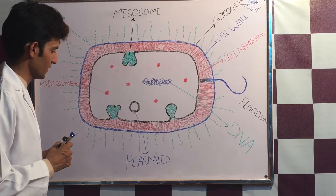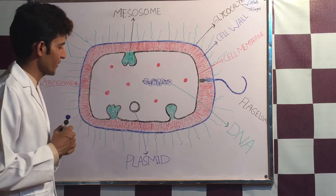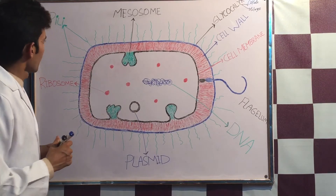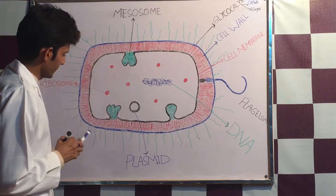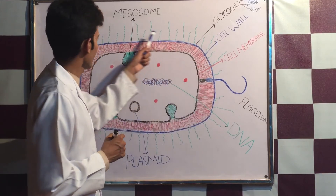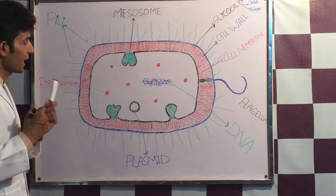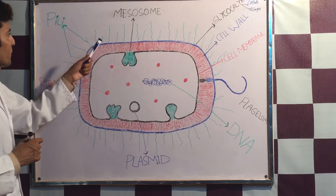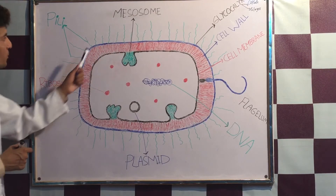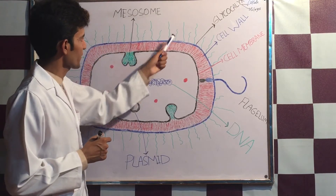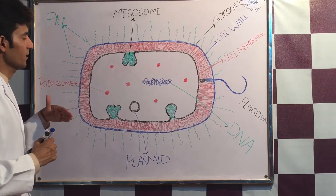Another function of the plasmid is that it is sometimes involved in the process of fertility by transmitting genetic material from one bacterium to another. On the surface, there are small structures called pili. Pili can be of two types: if the pili are smaller, we call them fimbriae.